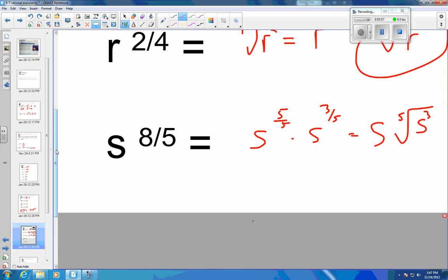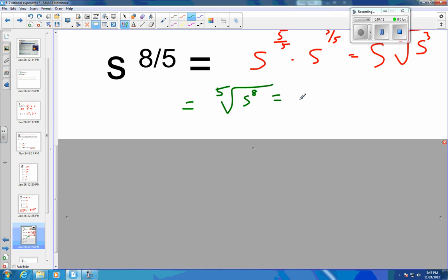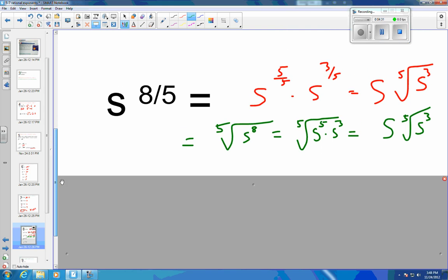Now those are weird. I could also look at it a different way. So I could write this as the 5th root of s to the 8th, and that would be equal to the 5th root of s to the 5th times s to the 3rd, which is still equal to s and then the 5th root of s to the 3rd. So whichever way you look at it, you're still going to end up with the same answer.